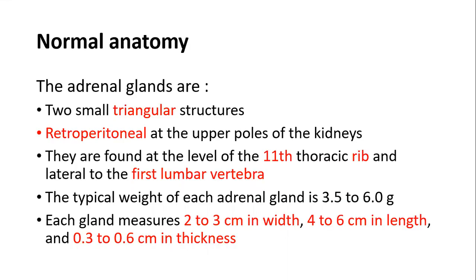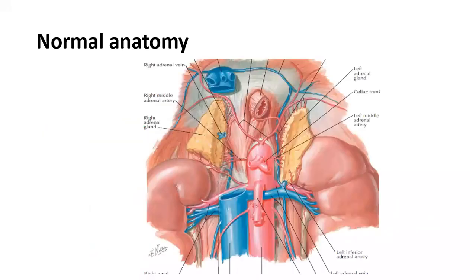The adrenal glands are two small triangular structures in the retroperitoneal space at the upper poles of the kidneys, found at the level of the 11th thoracic rib and lateral to the first lumbar vertebra. The typical weight of each gland is about 3.5 to 6 grams; each measures 2–3 cm in width, 4–6 cm in length, and 3–6 mm in thickness. Blood supply is about 10 arterioles per gland; venous drainage on the right goes directly to the IVC, while the left drains to the left renal vein.